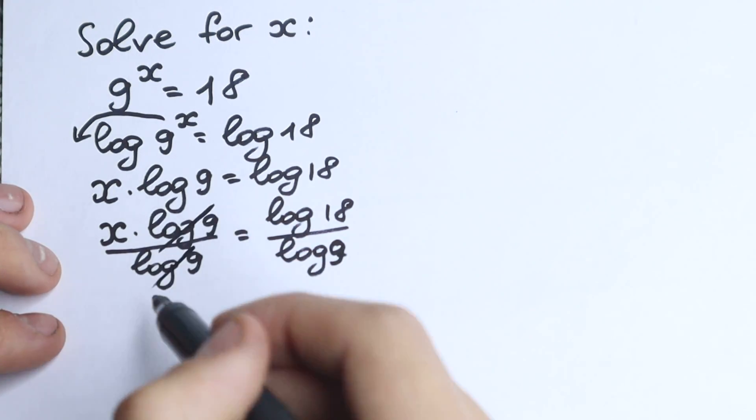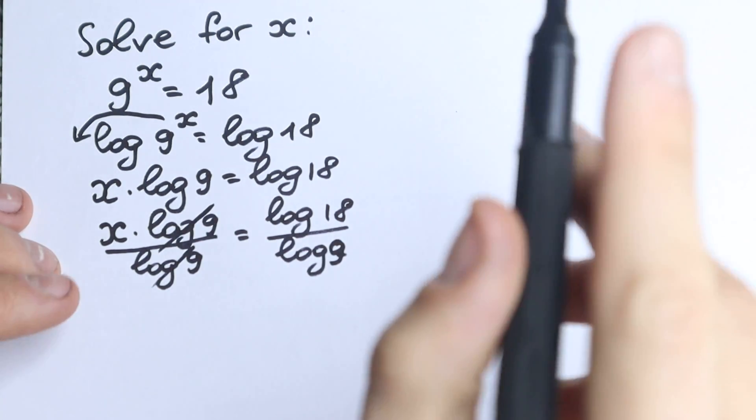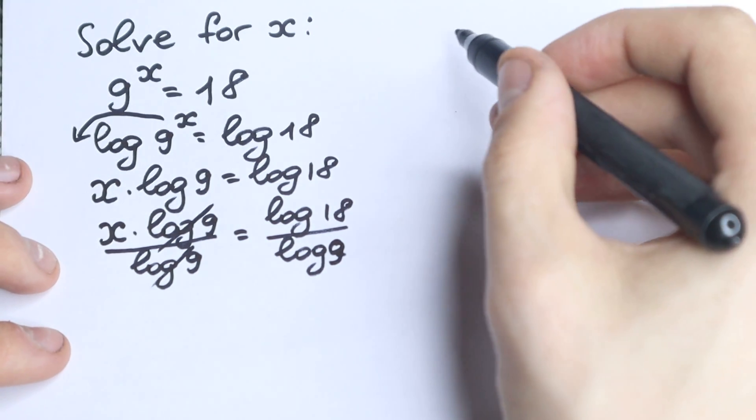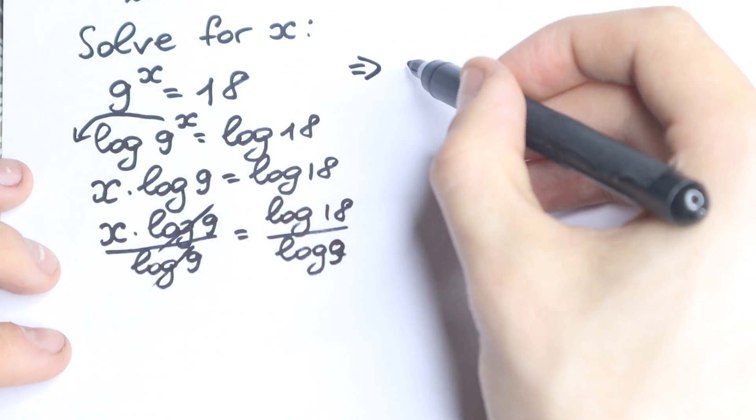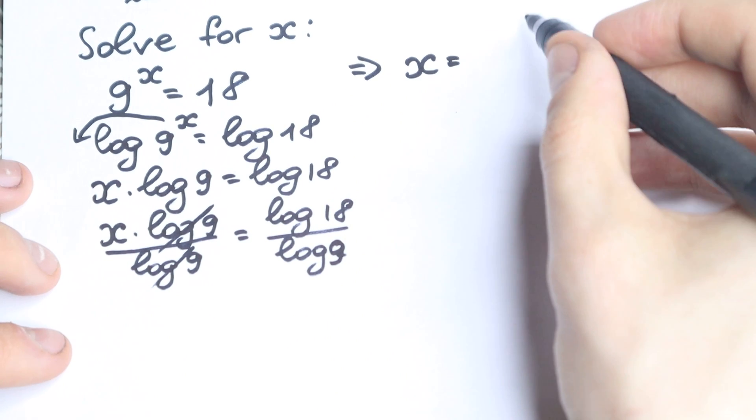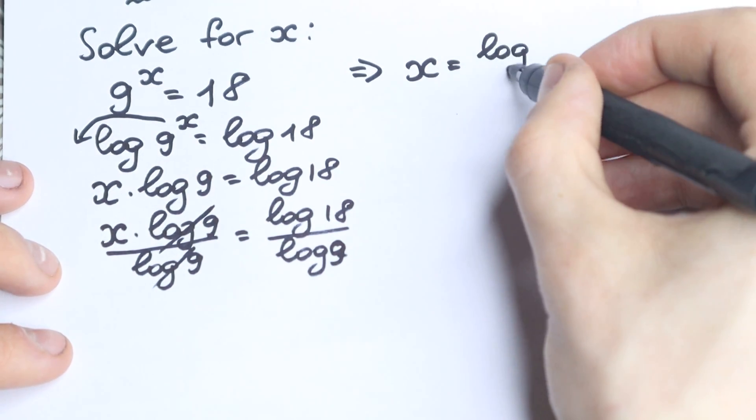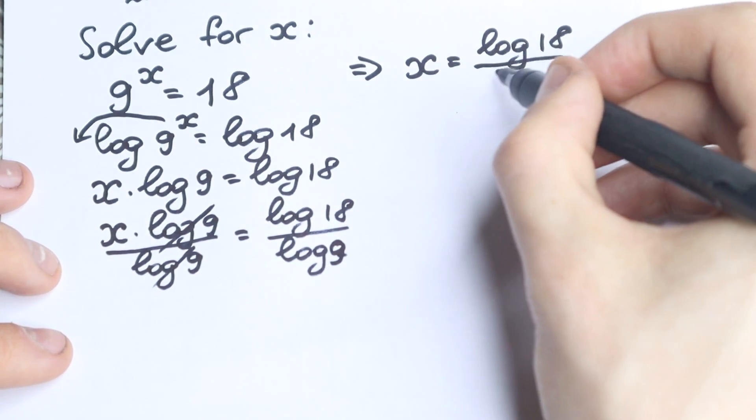We divide here, we cancel this, and we have our answer. It looks like our answer, but this is not the final answer. We have x = log(18)/log(9).